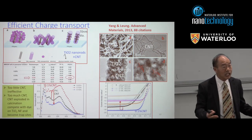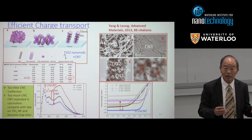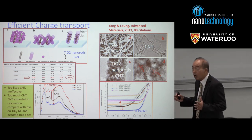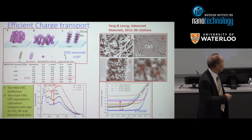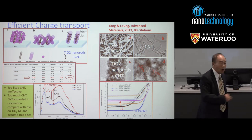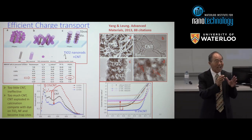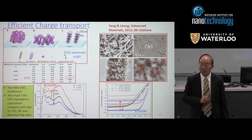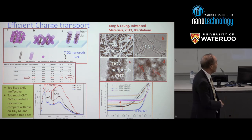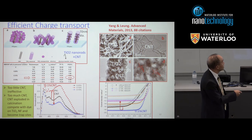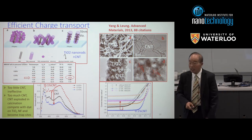The question is how much CNT to put in. If too little, it's not effective. If too much, during calcination the CNT would explode out and compete with the dye for sites. There is an optimal condition corresponding to 0.1% CNT in the precursor solution, or a few percent in the actual nanofibers. With this, we achieved 10% PCE — published in Advanced Materials about six years ago. At that point the best PCE was about 12%; today it's about 14%.